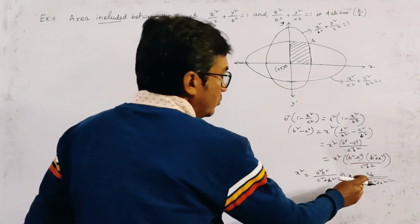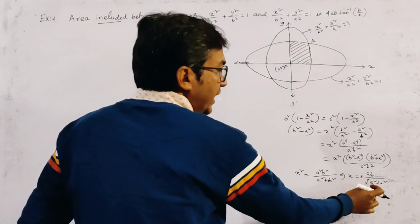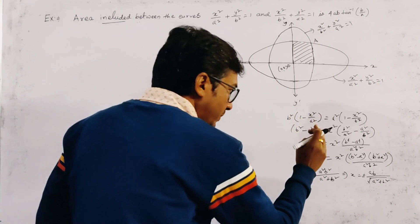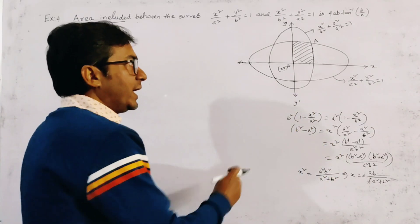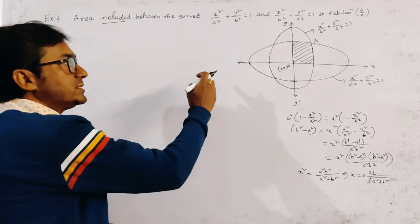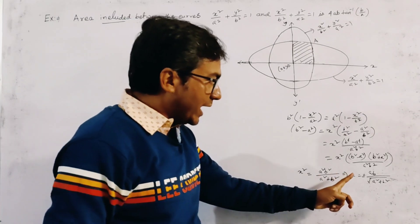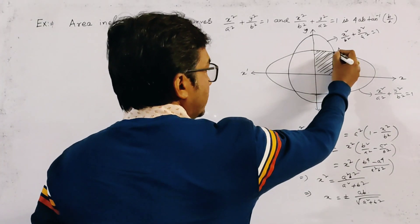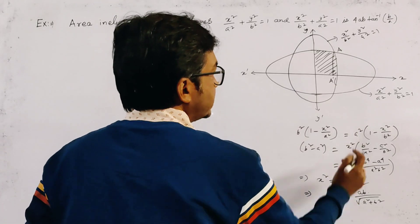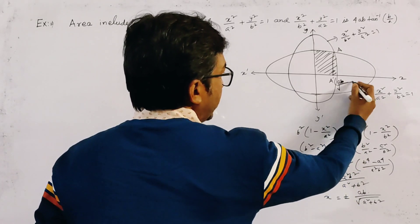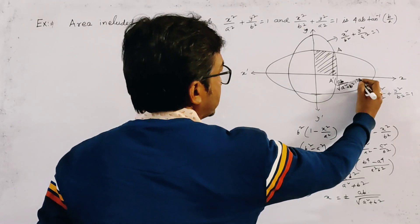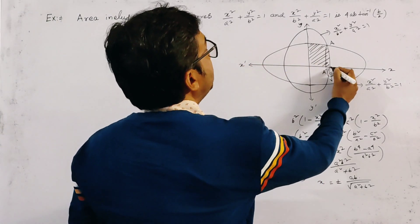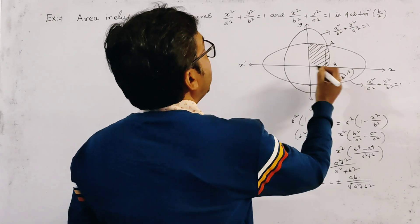We get two values of x: ±ab/√(a² + b²). We do not need to find the value of y for the intersection point A, because we use this x-value as the range of integration, and since the integration is with respect to x, we only need the x-coordinate of the intersecting point. The coordinate of A′ (the foot of the perpendicular) is (ab/√(a² + b²), 0).